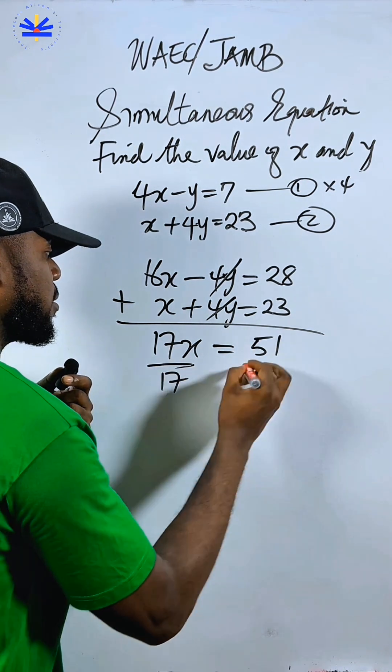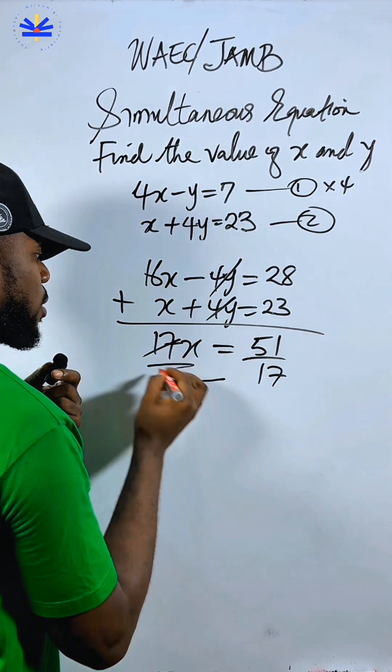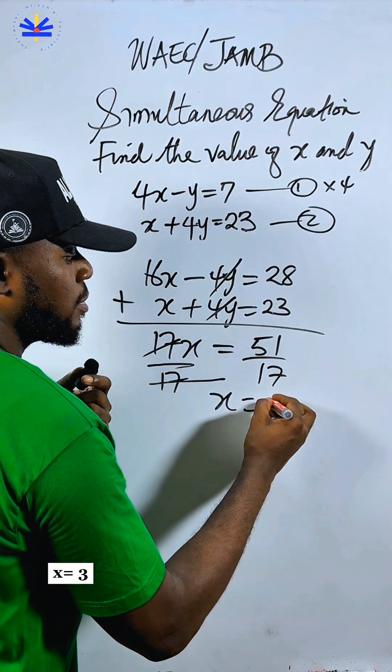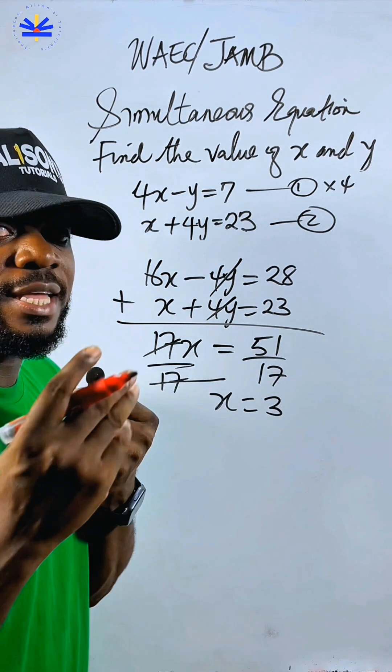If you divide both sides by 17, this one and this one will cancel. X now will be equal to 3. 17 will go into 51 three times.